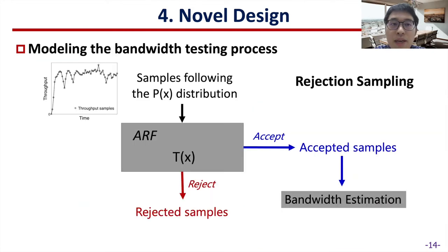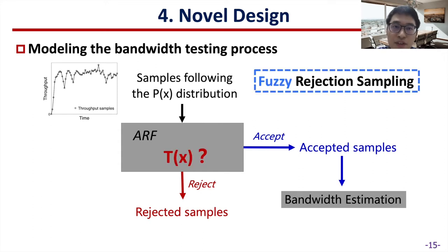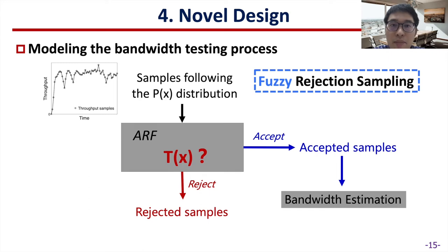We try to model the bandwidth testing process with rejection sampling. Given a group of throughput samples, ARF is used to select desired samples for bandwidth estimation. However, a challenge we face is that in the bandwidth testing process, the target distribution T(x) is unknown beforehand. Therefore, traditional rejection sampling cannot be directly applied in this scenario. We name this problem fuzzy rejection sampling.